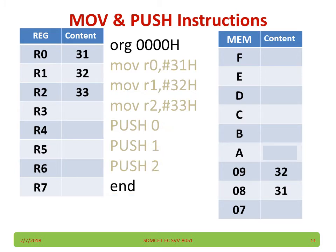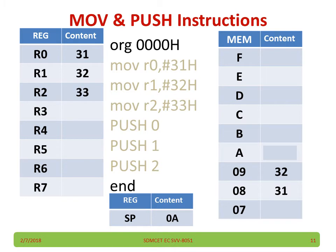Last, push 2: what will be the accumulator content? Again SP is incremented by 1, and 33 will be copied to that location.